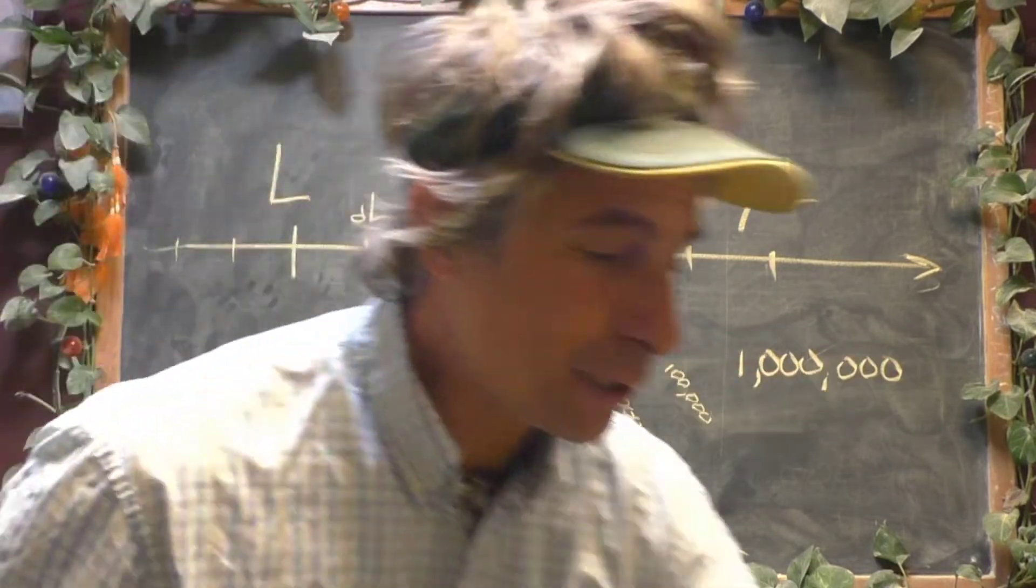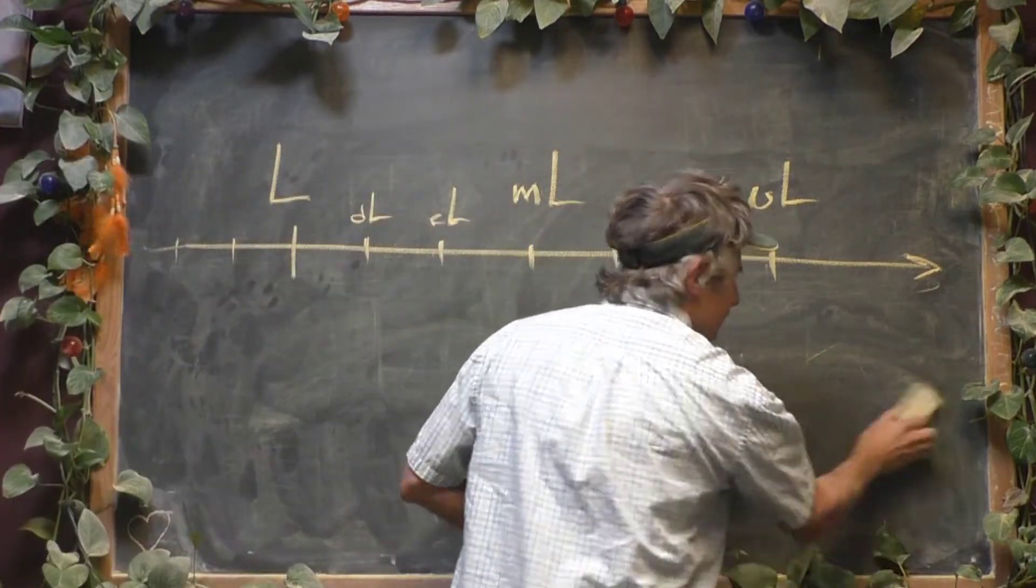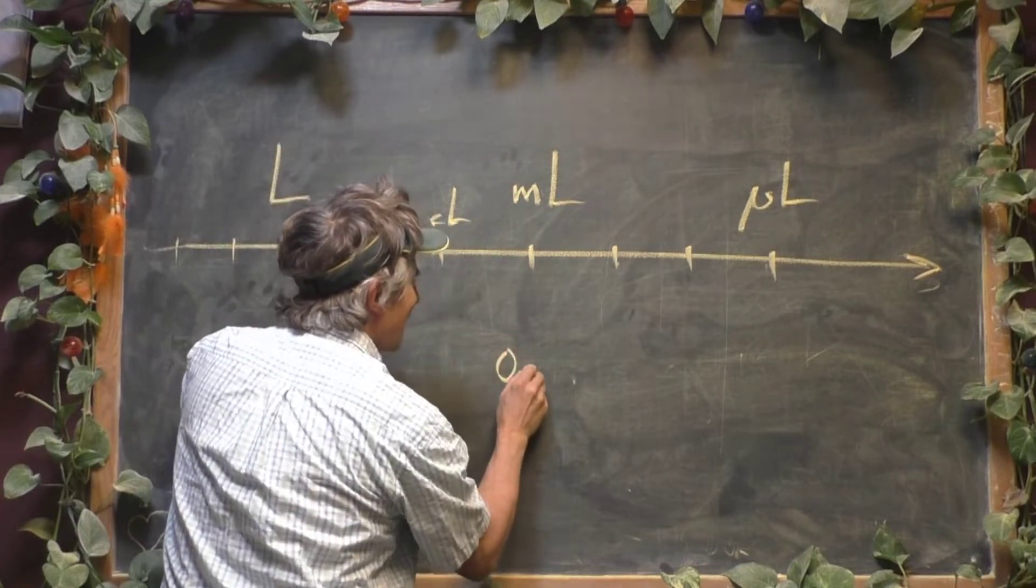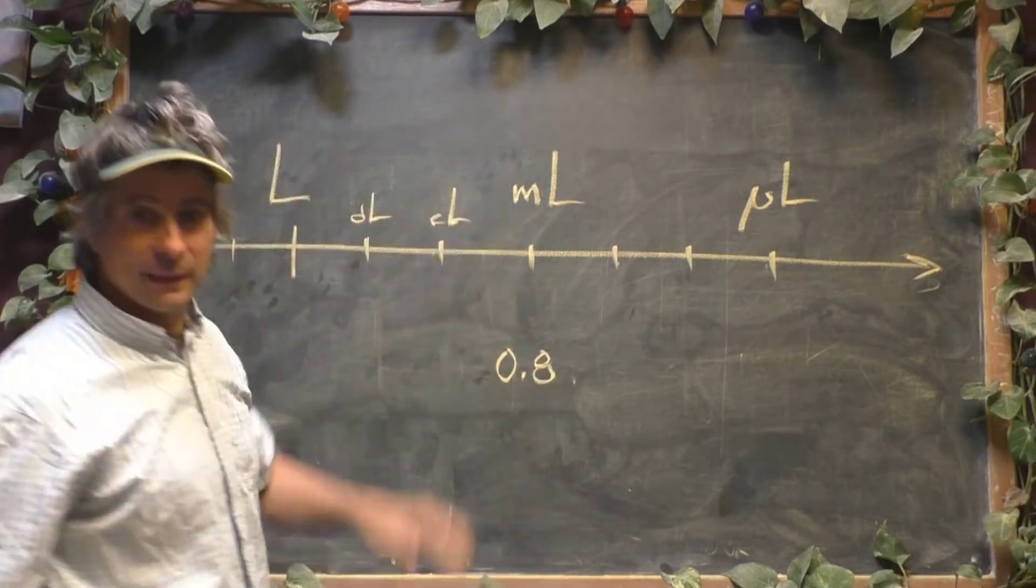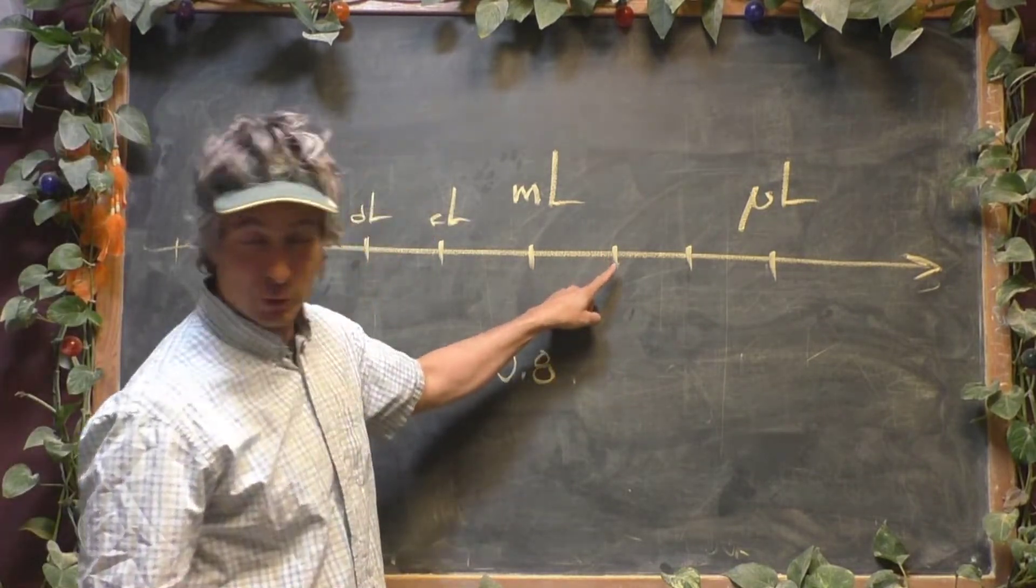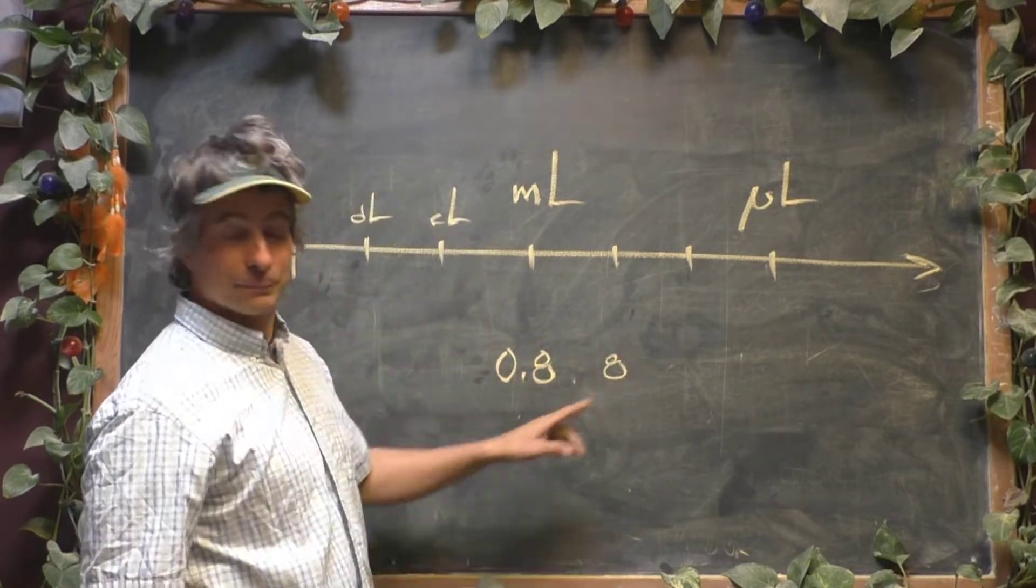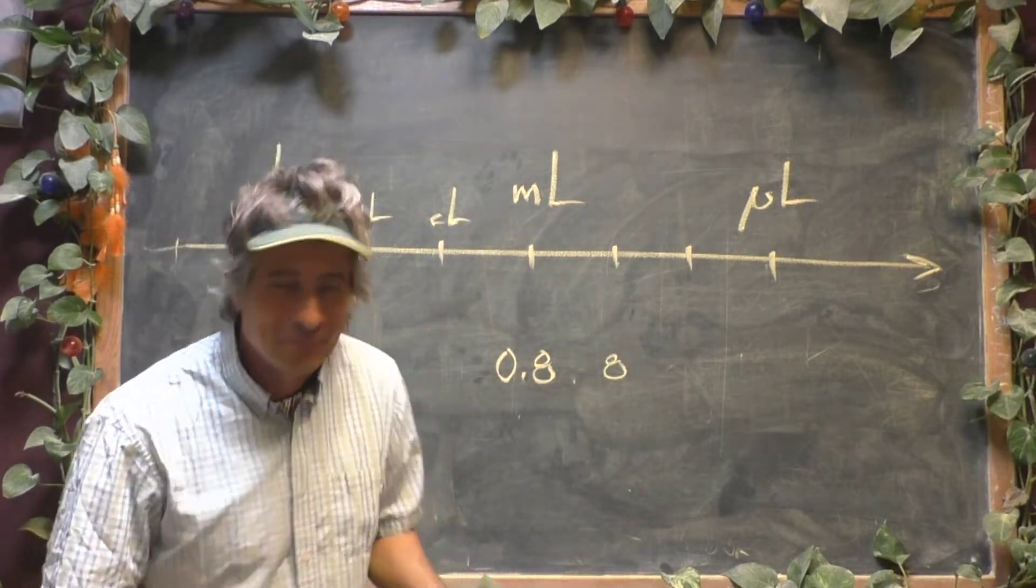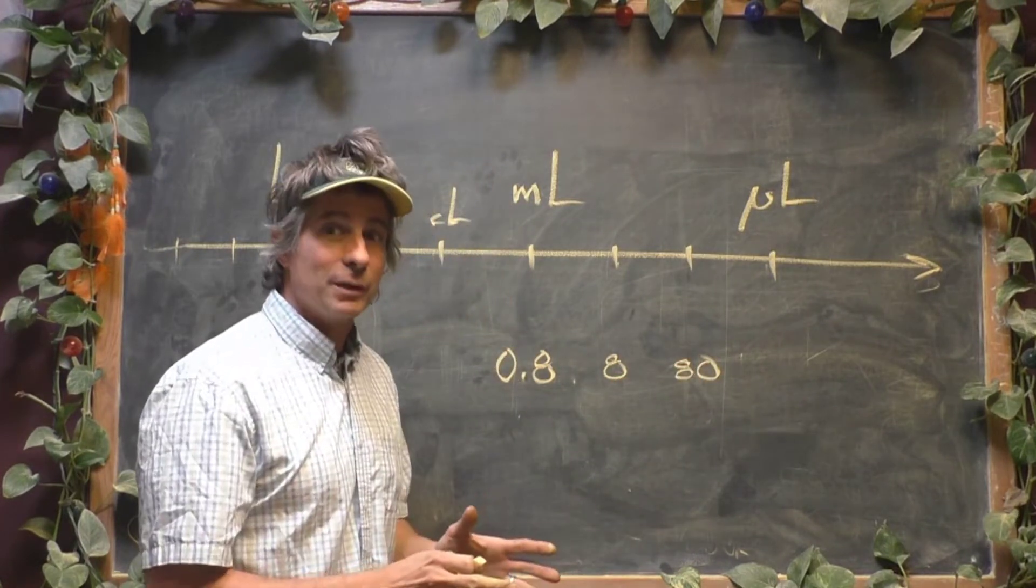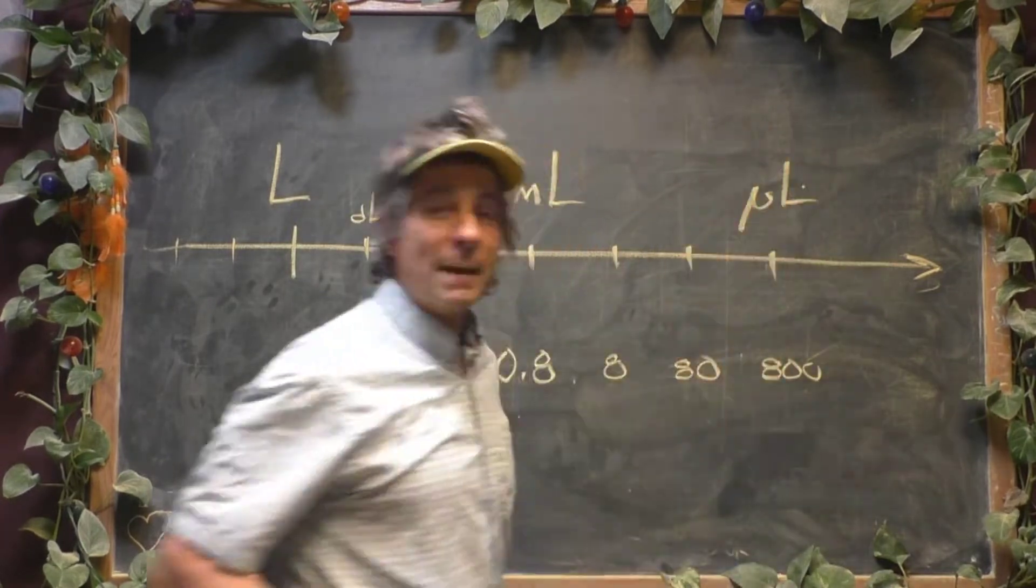So the problem we had to do did not start with 1 liter. As a matter of fact, it started over here at 0.8 milliliters. If we move that way 1, 2, whatever this measurement is called, it would be 8 milliliters, excuse me, whatever it's called liters. Then you move another one, it would be 80 whatever those are called liters. And you move once more, 800 microliters.